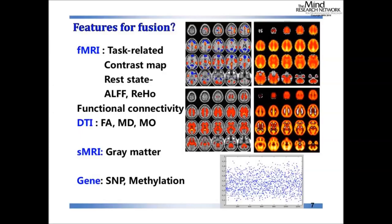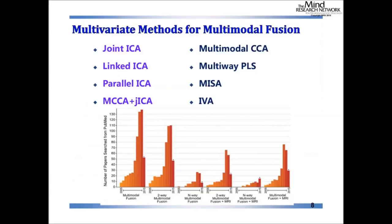When doing multi-modal analysis with high-dimensional data, we typically extract each data type into features in a simple manner. For fMRI data we extract task-related contrast maps; for resting fMRI we get fractional amplitude maps; for DTI we use FA and other measures; for structure we use segmented gray matter; and for genes we use selected SNPs and methylation data. This extraction into a simpler space facilitates analysis across modalities.